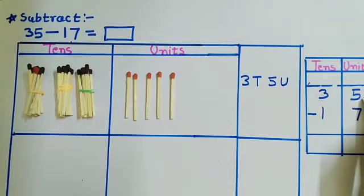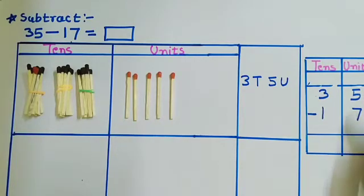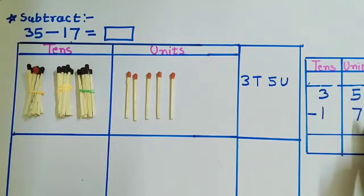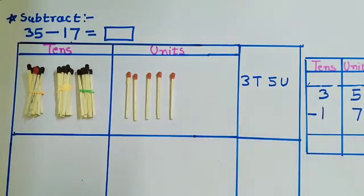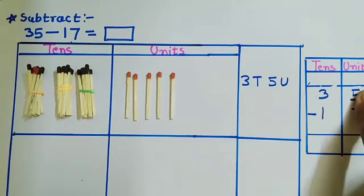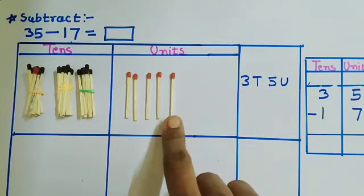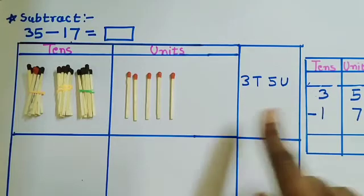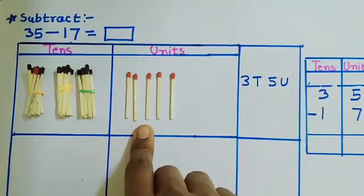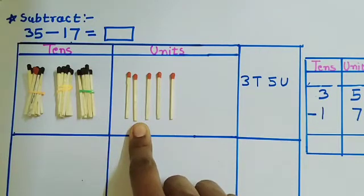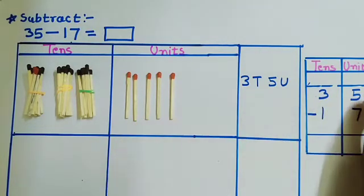We have to subtract 7 from 5. Remember children, we have to subtract the below number from the above number. Here we have 7, and we have to subtract 7 units from 5 units. Can we do that? No. We cannot subtract 7 — we cannot take out 7 sticks from 5 sticks because 5 sticks are fewer.